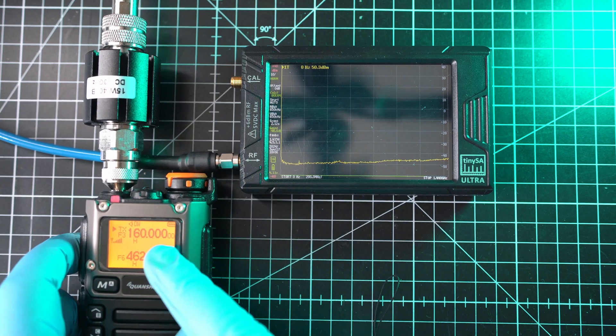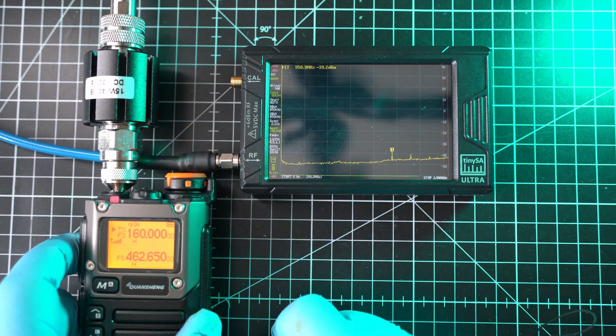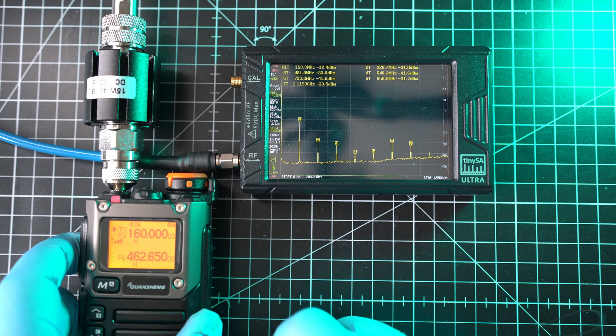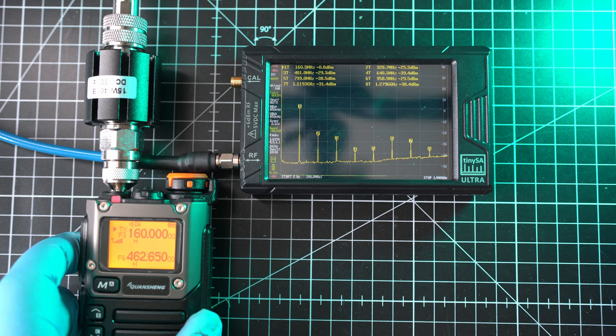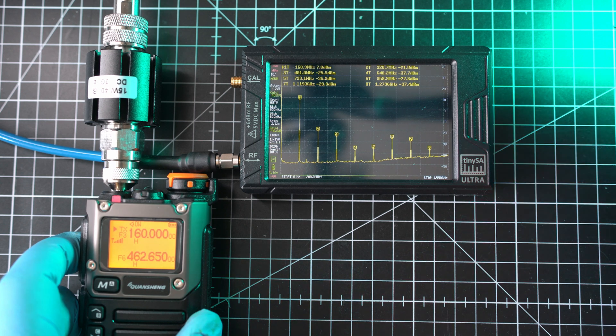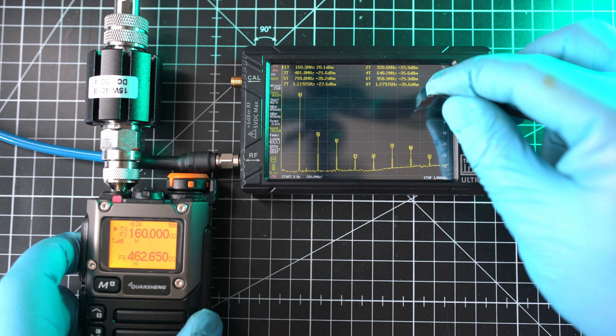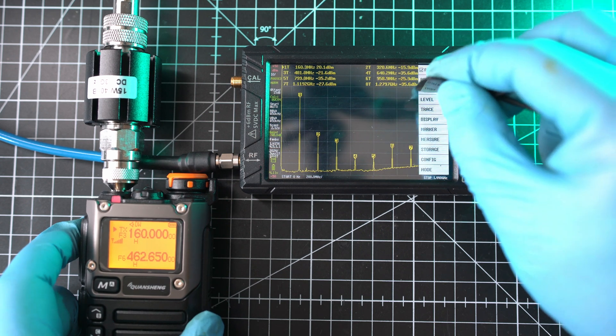And last in queue is Quansheng UVK5. This is my favorite radio. Let's see how clean or dirty it actually is. Oh shite. TinySA Ultra picked up extra 7 spurs. Signals coming out of this radio.